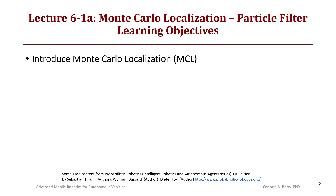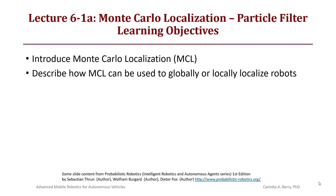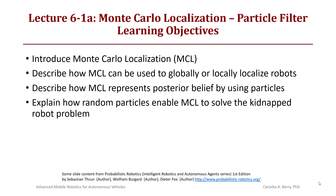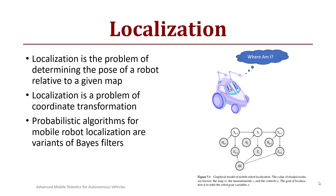For lecture 6-1 on Monte Carlo Localization or particle filters, the learning objectives are to introduce Monte Carlo Localization, describe how MCL can be used to globally or locally localize a robot, describe how MCL represents the posterior belief by using particles, and explain how random particles enable MCL to solve the kidnapped robot problem. Localization is the problem of determining the pose of a robot relative to a given map — basically answering the question: where am I?